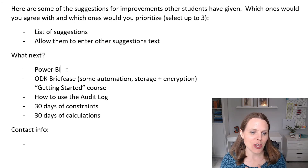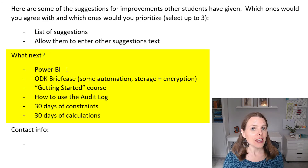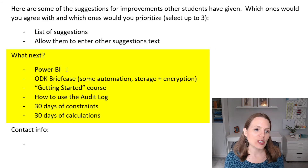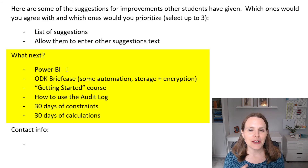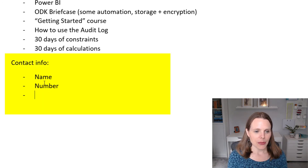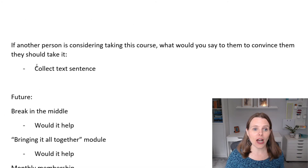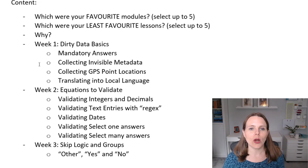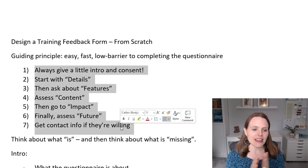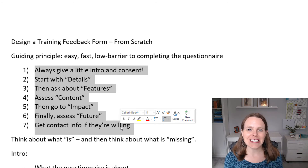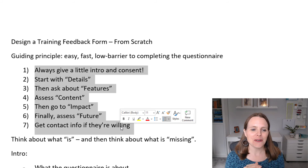What next? I'll ask: do you want to take a Power BI course, an ODK Briefcase course, an expanded getting-started course, a course on how to use the audit log, 30 days of constraints, or 30 days of calculations? And finally, contact info: name, phone number, and email address. That covers all my thoughts on what data I want to collect. The key checklist is: intro, consent, details, features, content, impact, future, and contact info — useful for anyone creating a training feedback questionnaire from scratch.